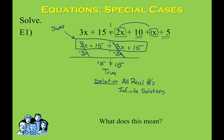To summarize: when you're solving an equation and you end up with a true statement where the variables have disappeared and added to 0, then the solution is all real numbers or infinitely many solutions. If you recognize ahead of time that the answer is going to be all real numbers, you're welcome to stop there and state the answer — you don't have to continue working it out until you get something like 15 equals 15.